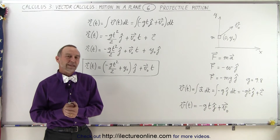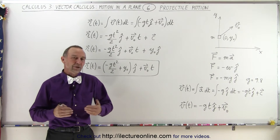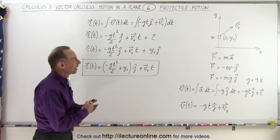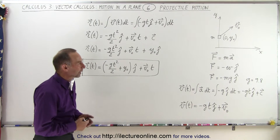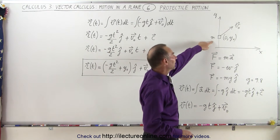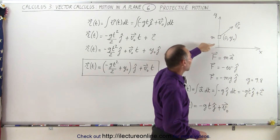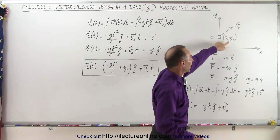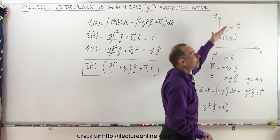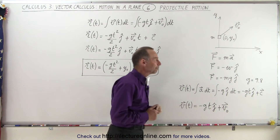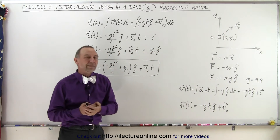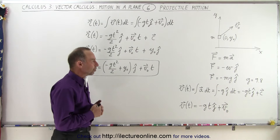Welcome to our lecture online. Now let's take a look at a general concept of projectile motion. Let's say that we have a small object with mass m that's being shot at, starting at some initial height y-sub-naught, at some angle with some initial velocity v-sub-naught. How do we describe that motion using vector notation?